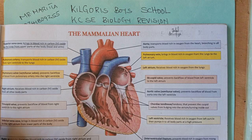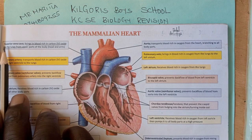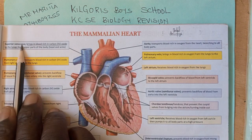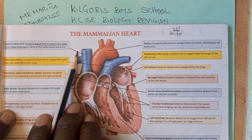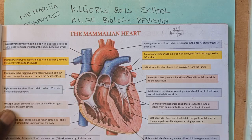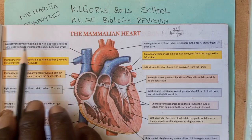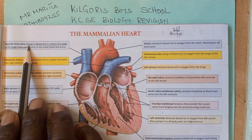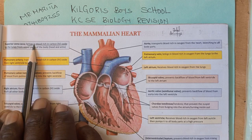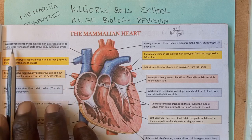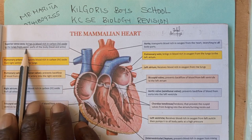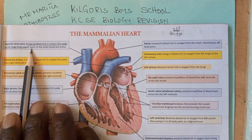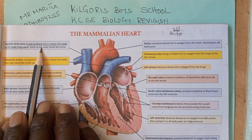To start with, we have the Vena Cava. Its function is that it brings blood rich in carbon dioxide to the heart from the upper parts of the body.